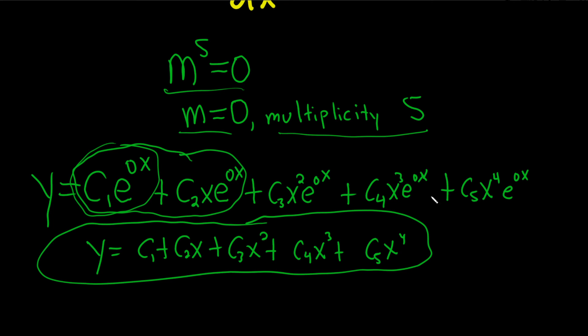So multiplicity five, you're going to get basically five different solutions, you see. And the final answer is just a linear combination of those solutions.